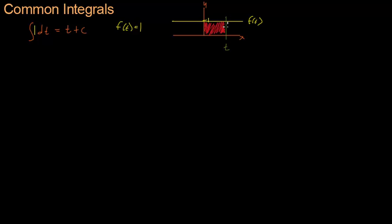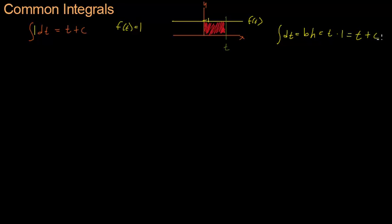Hopefully it will make more sense when I highlight exactly what area we're accumulating. You can see if f of t increases, we're going to get more area; if it decreases, we get less area. So it should be pretty easy to calculate this integral by hand. The integral of dt is the area of this shape, and that's just a box. The area of a box is base times height. The base is t minus 0, which is t. The height is always 1 since it's a constant function. So t times 1 equals t, plus a constant. It's very common to forget that constant, so don't forget it.